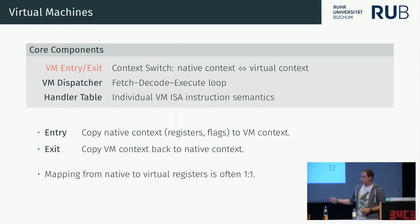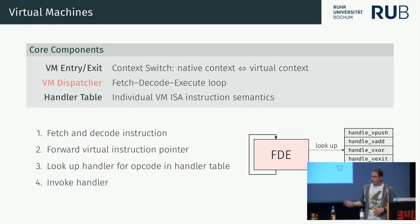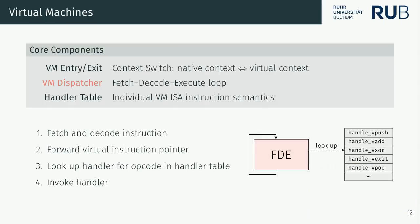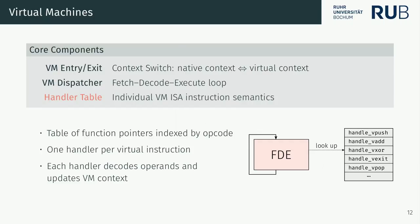The VM entry copies native registers and flags to the virtual context; VM exit copies them back. The native-to-virtual register mapping is usually one-to-one. Then there's a traditional fetch-decode-execute loop that fetches and decodes one instruction, advances the virtual instruction pointer, and looks up the handler in a handler table — which is just a table of function pointers indexed by opcode. Each handler decodes operands, operates on them, and updates the VM context.